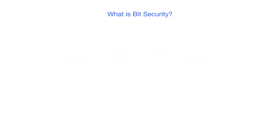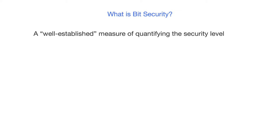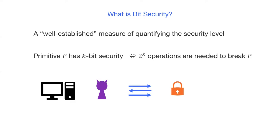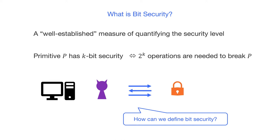In this talk, we want to consider what is bit security. It is, in some sense, a well-established measure of evaluating the security level of cryptographic primitives. We say primitive P has k-bit security if every adversary needs 2 to the k operations to break P. So the question is, how can we define bit security?